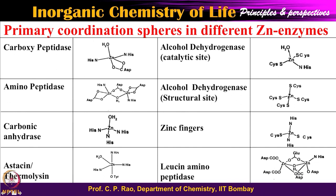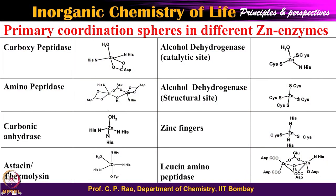Alcohol dehydrogenase also has a second metal center — it has two zinc centers. One is the catalytic center where the reaction occurs. The other is a structural zinc center — no function occurs there, but it is required to hold a particular conformation and provide structural rigidity to the protein. This structural zinc is bound to four cysteine residues, which is different from the catalytic zinc. So there are two distinct zinc centers — one catalytic and one structural — both part of the same protein.